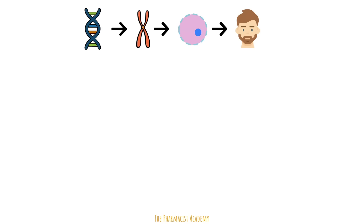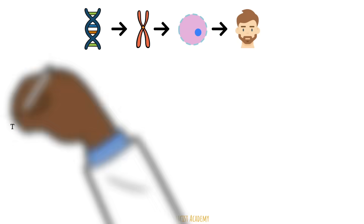Now, cells divide in normal circumstances to form new cells. This mechanism helps get rid of any old or damaged cells. The body has proteins to help regulate this.